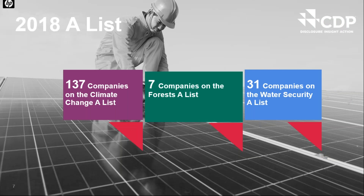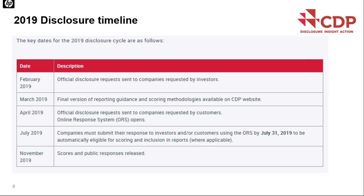Congratulations to all those companies achieving the 2018 A-list — a huge accolade given the bar was raised for 2018. For 2019, the disclosure timeline is available on the CDP website and is regularly updated. We're working towards returning to normal timelines: by end of March, final versions of reporting guidance and scoring methodologies will be available; by end of April all programs will be open on the online reporting system; by end of July is the deadline for submitting disclosure; and scores and public responses will be released by November.